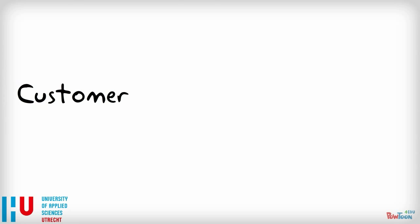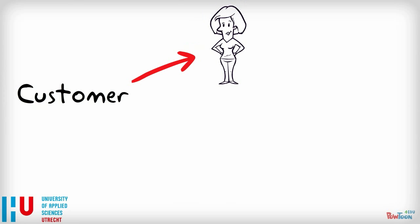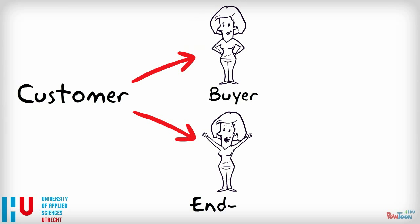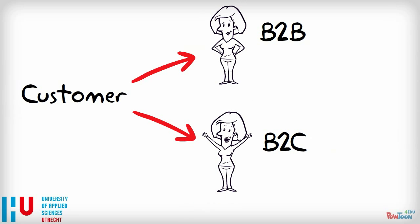The term customer refers to both buyers and end users. The difference between a buyer and an end user is particularly relevant in B2B markets because it forms a foundation for segmentation. In business to consumer, or B2C for short, segmentation is always done based on the end user, while in business markets, also known as business to business or B2B for short, segmentation is always done based on the buyer.